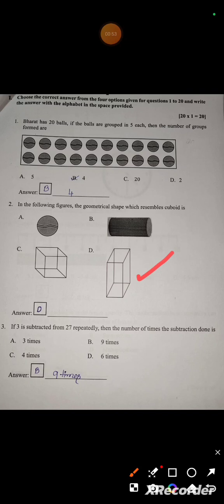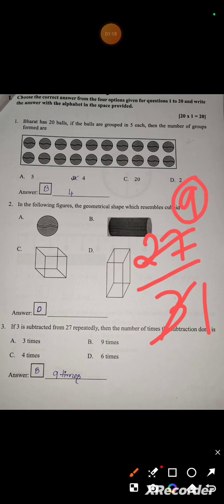If 3 is subtracted from 27 repeatedly, then the number of times the subtraction is done is? One method is division: 27 divided by 3, 9 threes are 27. But here they are asking repeated subtraction method. The answer is 9 because 27 minus 3 will take 9 times. So option is B.